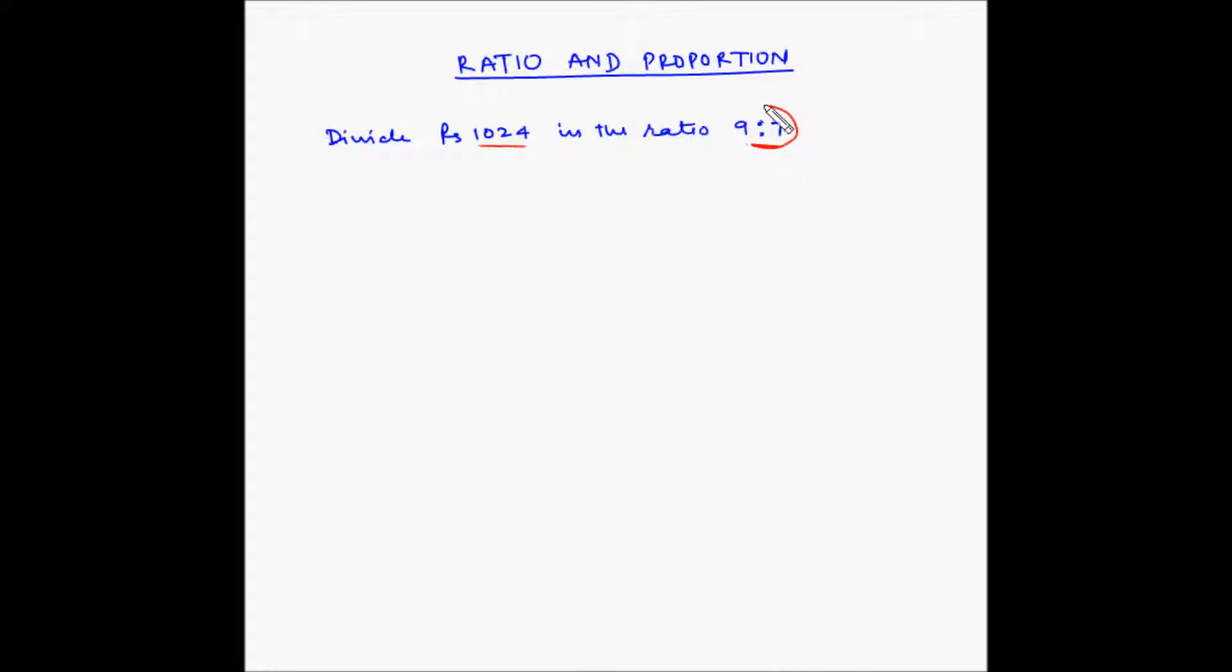What does this mean? In the ratio 9 is to 7, basically we have to divide this into two parts. We have to divide rupees 1024 into two parts such that one part is 9x, the other part is 7x.